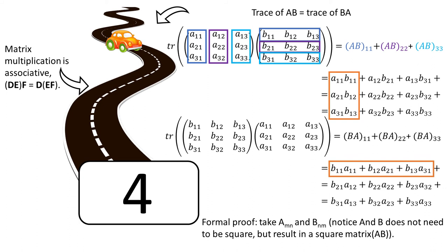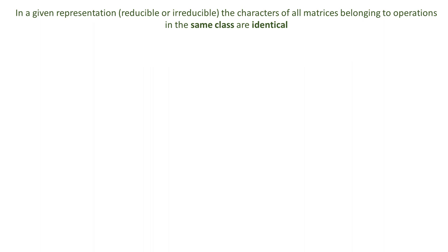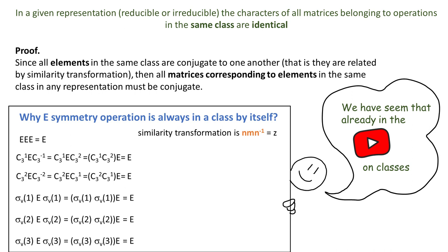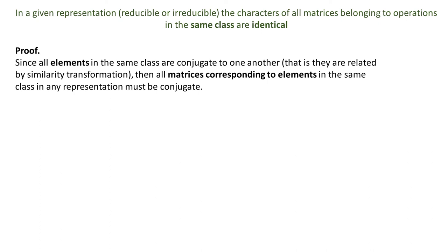So finally rule number 4. In a given representation, reducible or irreducible, the characters of all matrices belonging to operations in the same class are identical. Since all elements in the same class are conjugate to one another, that is they are related by similarity transformation, then all matrices corresponding to elements in the same class in any representation must be conjugate. Sorry for reading out but it will be faster this way. So that is the condition of conjugation.